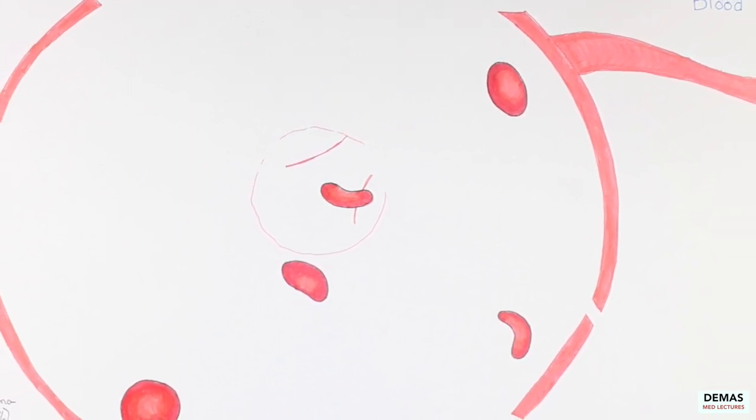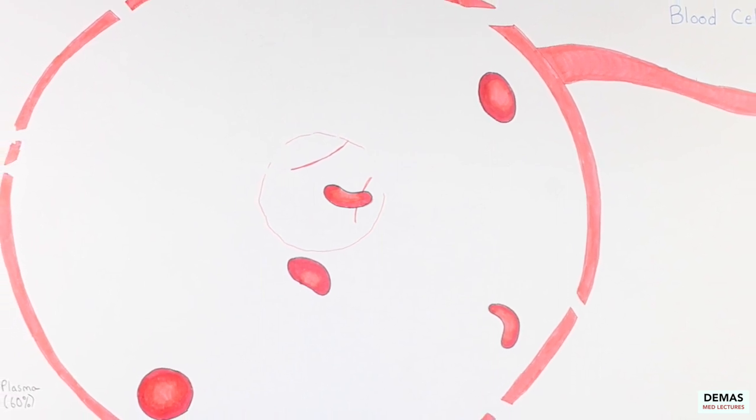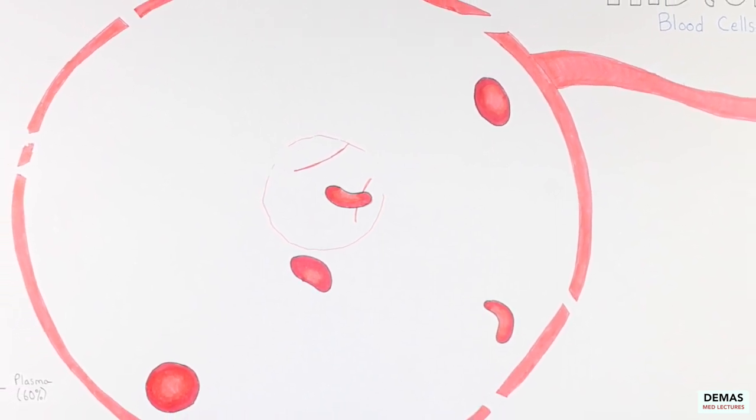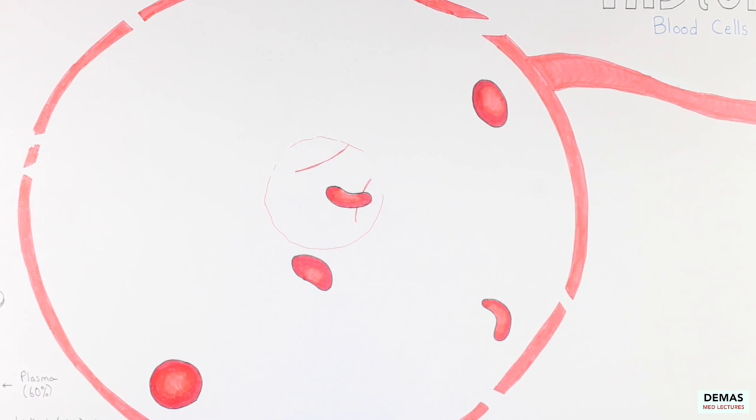In addition, red blood cells do not contain a nucleus in their mature form. This is once again to optimize its storage of hemoglobin for gas exchange.